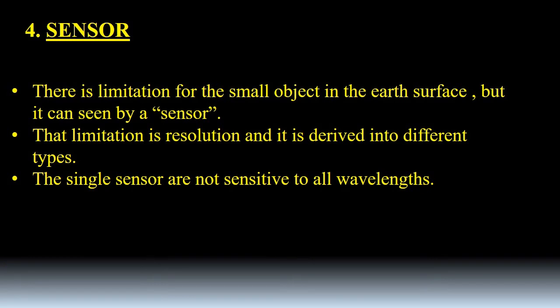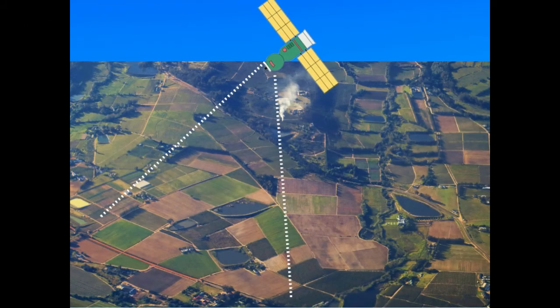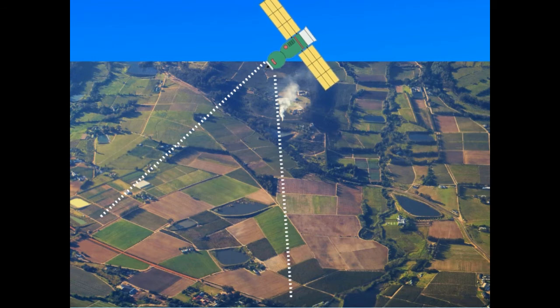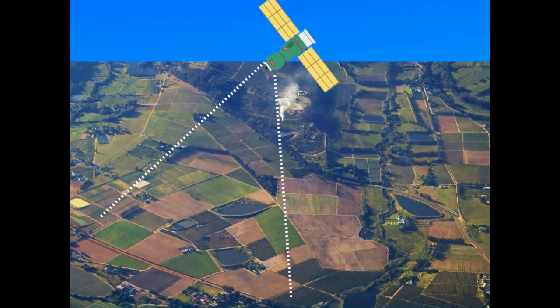The fourth one is sensor. That is a limitation for all the small objects in the earth surface, but it can be seen by a sensor. Of course, our human eye can't to that extent, but the sensor can. The limitation is the resolution and it is divided into different types. In the field of remote sensing, there are four types. The single sensor is not sensitive to all the wavelengths. Here is a little example of how the satellite is taking images of the land surface. All the images will be taken. It is swath, path, everything will be there like that.